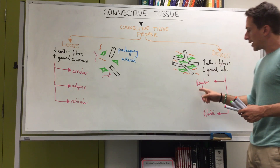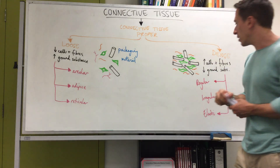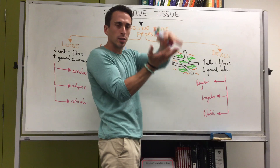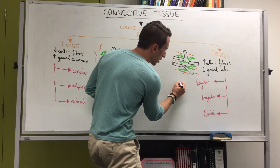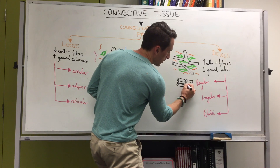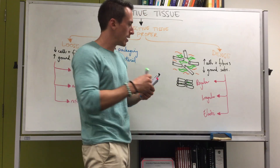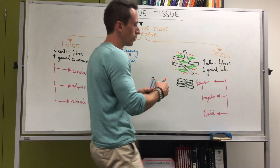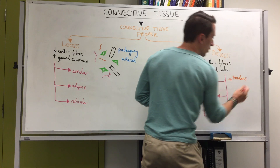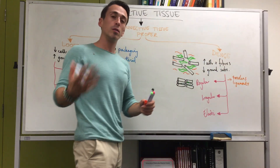Dense regular connective tissue is made up predominantly of collagen fibers with fibroblasts. Because it's dense and regular, the arrangement is like lasagna sheets stacked on top of each other — very dense, but regular because all the collagen fibers run in the same direction, with squished fibroblasts in between. Dense regular connective tissue makes up tendons, which hold muscle to bone, and ligaments, which hold bone to bone.